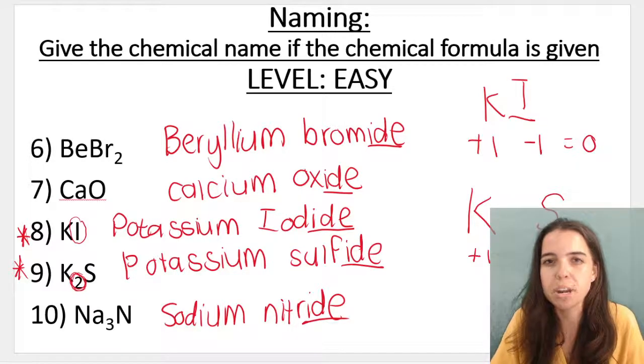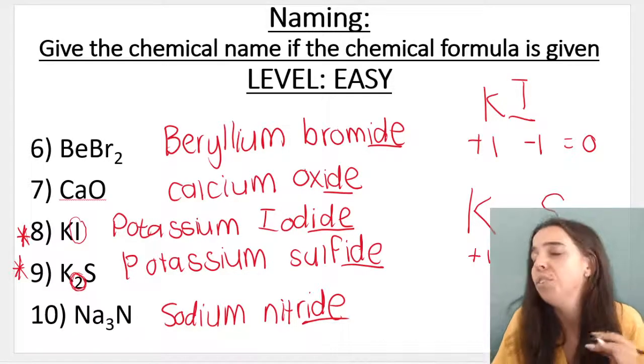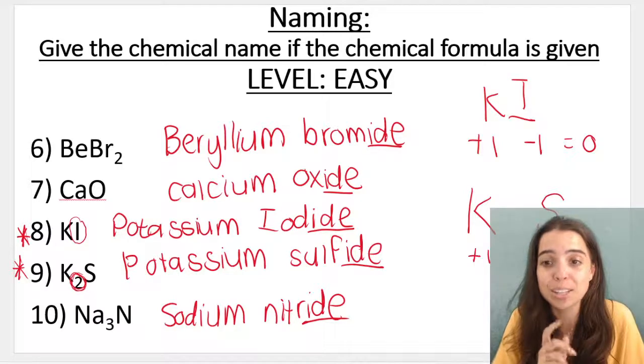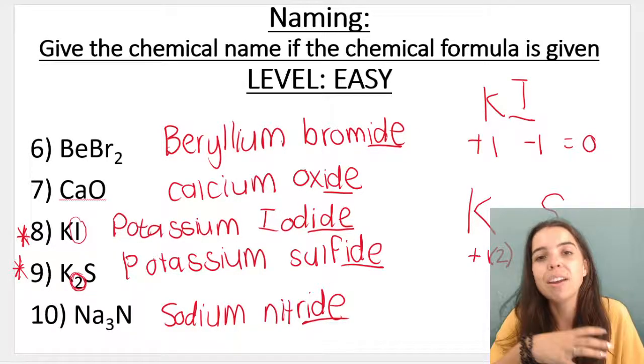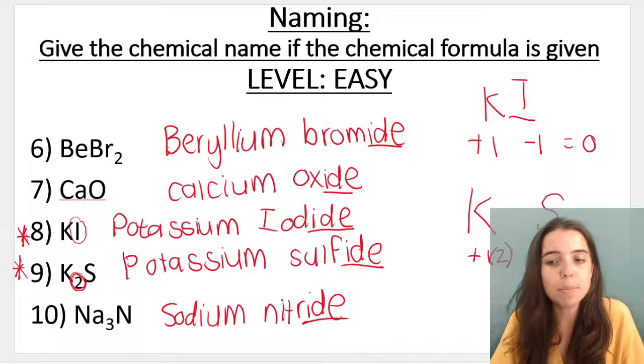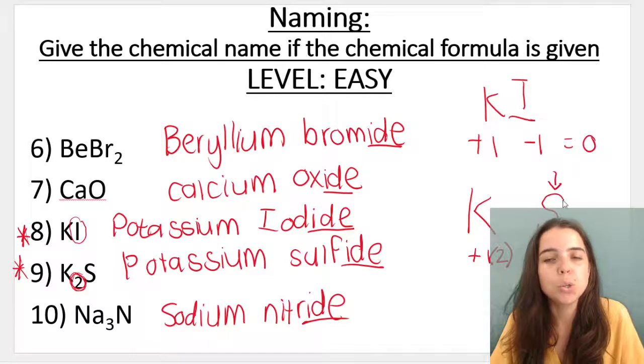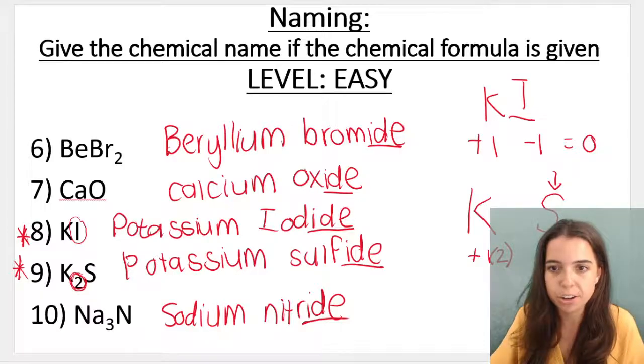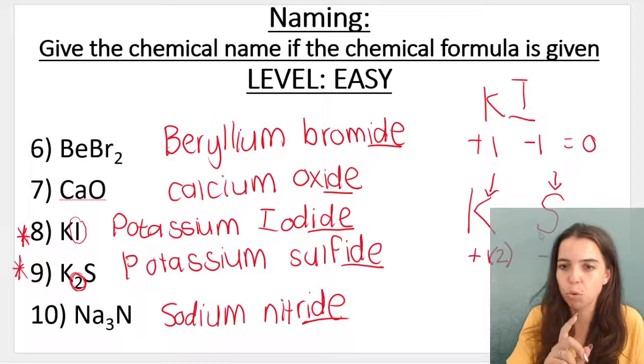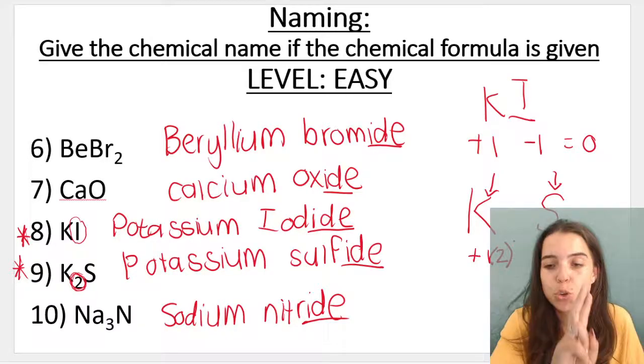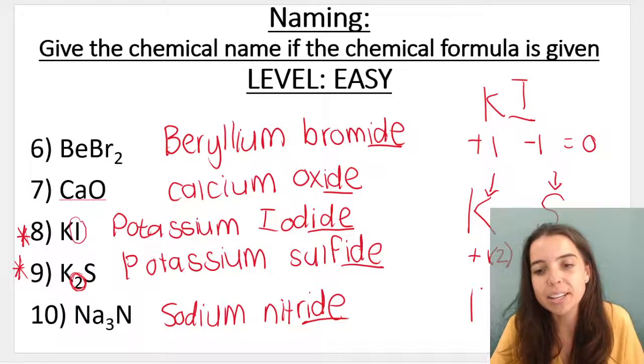In potassium sulfide, potassium's charge is +1, sulfur's charge is -2. Look on the periodic table for that information if you don't know what I'm talking about - you need to go watch the previous videos in this playlist. So potassium's charge is +1, sulfur's charge is -2. That means I need two potassiums for every sulfur. Remember, if you have a charge of -2, it means that you can accept two electrons. Potassium only has one electron to give away, that means I need two potassiums. That's why it's K₂S.